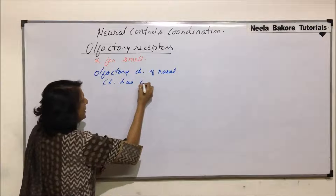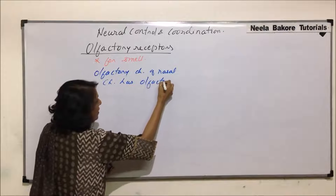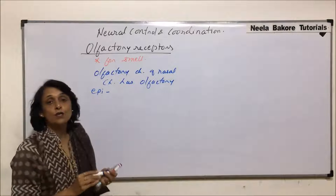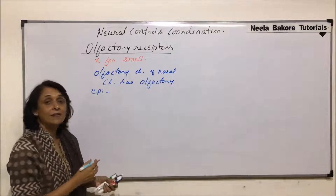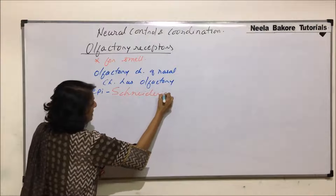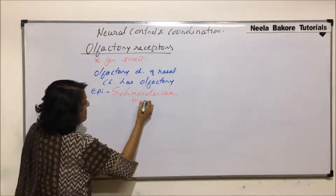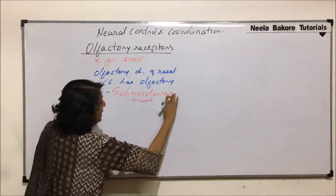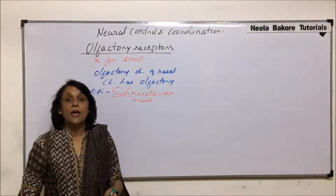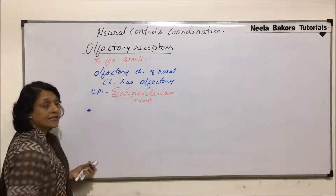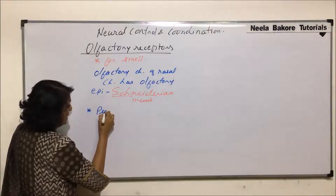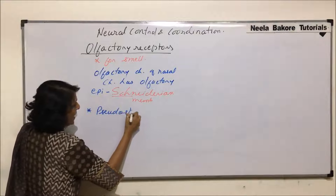This olfactory chamber of the nasal chamber has a special type of epithelia known as olfactory epithelium. One more term given to this olfactory epithelium is nidarian membrane. This olfactory epithelium is a pseudo-stratified epithelium.